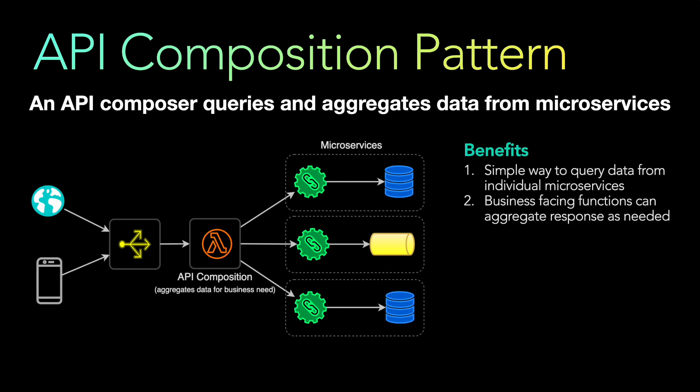There are several benefits. It is a simple way to query data from individual microservices, and one function or API can orchestrate that data. Business-facing functions can also aggregate responses as per their need — not always will clients request only domain or entity data; there will be business data and control plane data that may also need to be massaged.